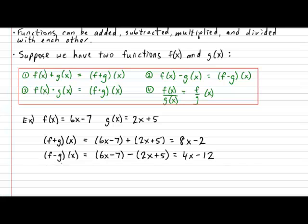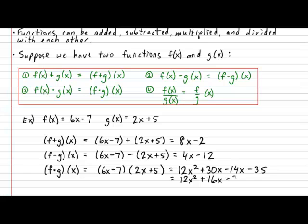Let's take a look at multiplying. Suppose I ask you for the rule of f multiplied by g of x. So that means that 6x minus 7 gets multiplied to 2x plus 5. So let's do the double distribution. We get 12x squared plus 30x minus 14x minus 35. And a bit of simplifying will give us 12x squared plus 16x minus 35.